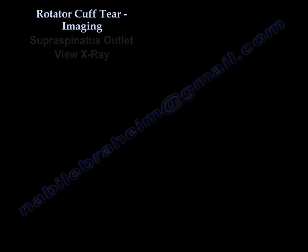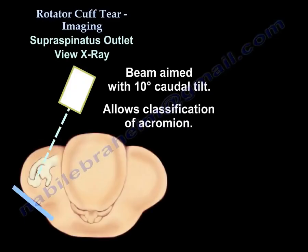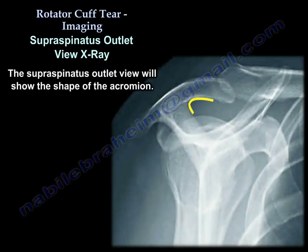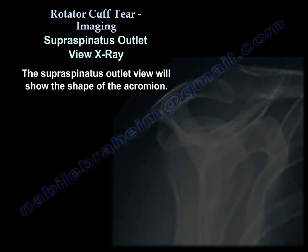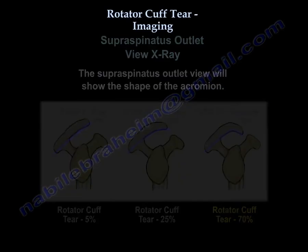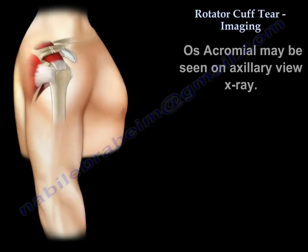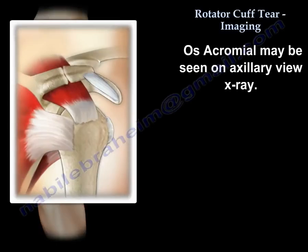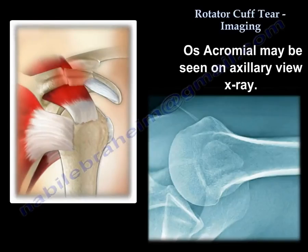We also get the supraspinatus outlet view. It will show us the acromion shape — whether it is flat type 1, curved type 2, or hooked type 3. It can also show us an os acromion on the x-ray view.